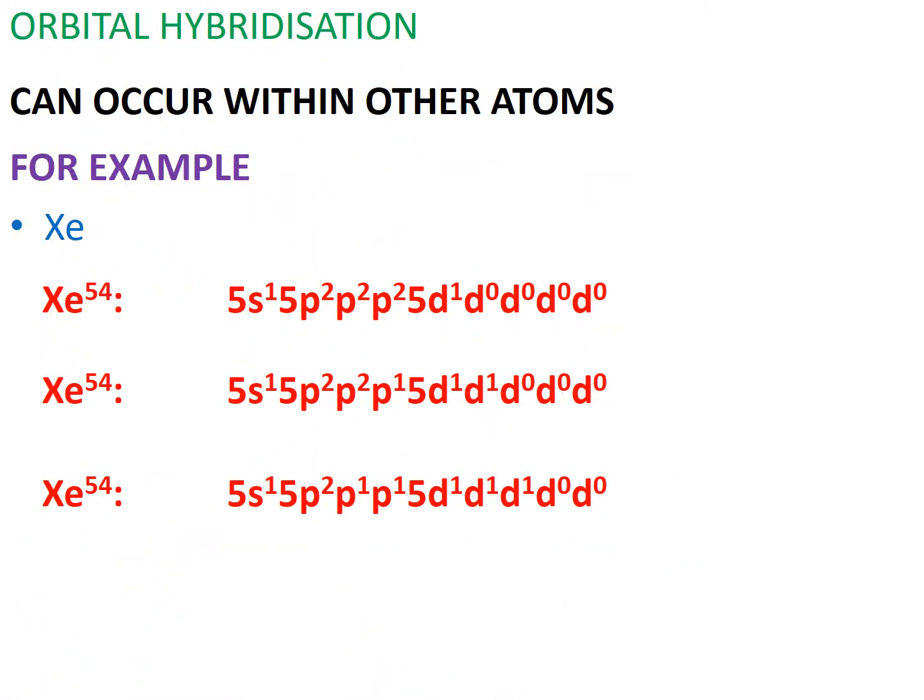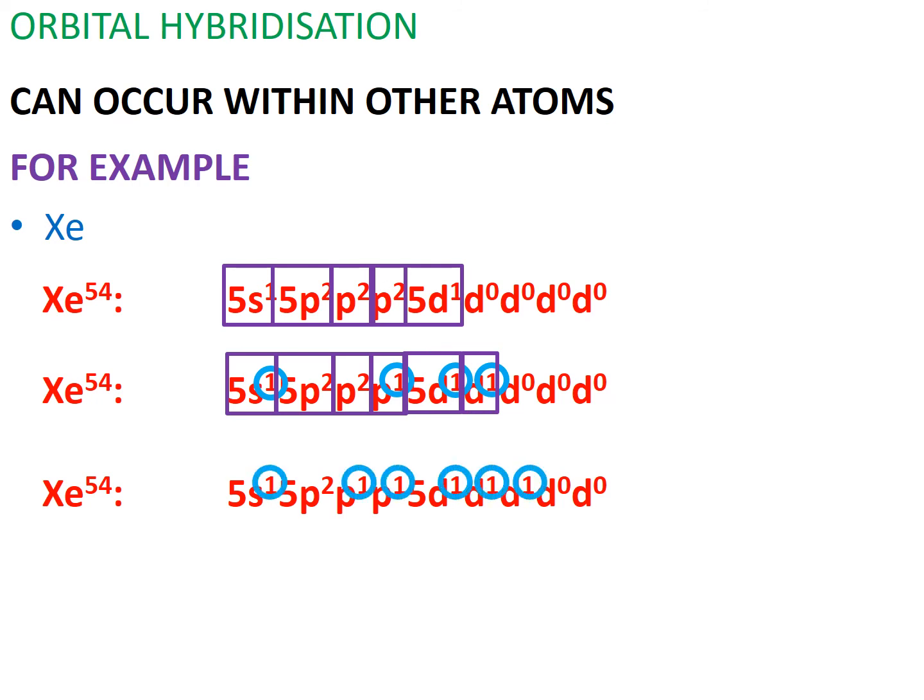And note that when the number of bonds xenon is able to form changes, so too does its number of areas of electron densities. Hybridization resulting in two unpaired electrons will result in a valence shell of five areas of electron density. Hybridization resulting in four unpaired electrons will result in a valence shell of six areas of electron density. And hybridization resulting in six unpaired electrons results in a valence shell of seven areas of electron density.